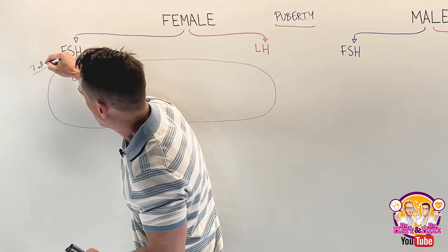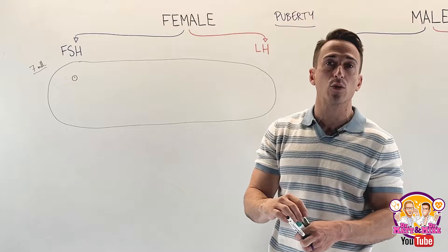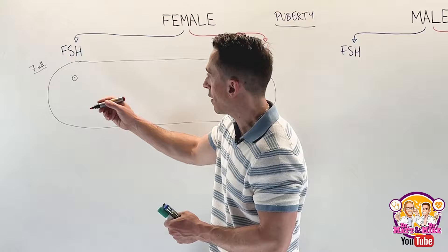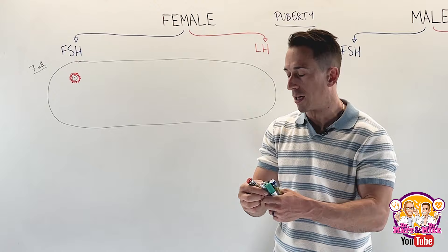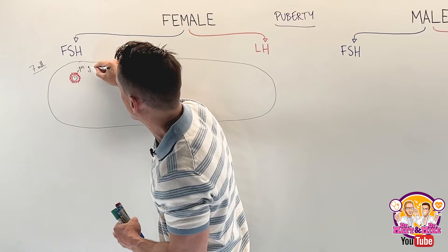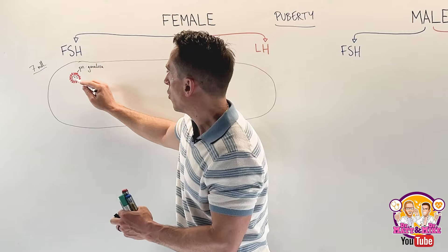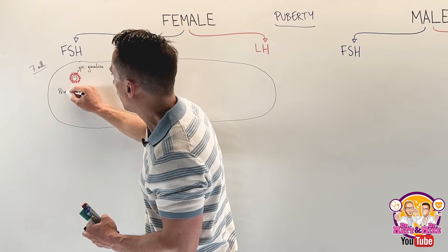These eggs can't survive by themselves in the ovary — they need to be nourished and looked after. So early on, the oocytes are surrounded by a layer of cells called pregranulosa cells. Together, the oocyte and the pregranulosa cells are called a primordial follicle.